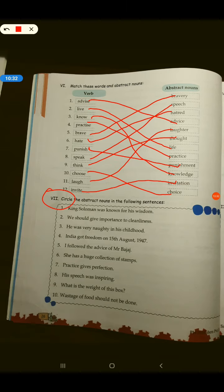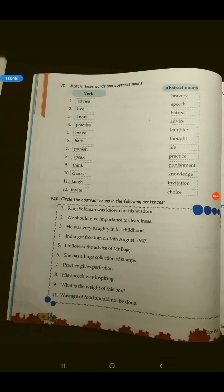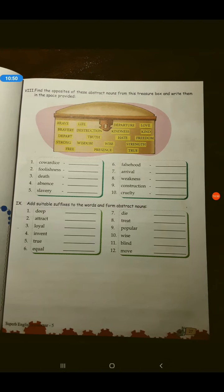Yeh wala aap khud kar hoge. Thik hai, I will give you one example. King Solomon was known for his wisdom. Wisdom is something which we can't touch or see, we can only feel. So wisdom is the abstract noun. Rest aap karoge bacha log apne homework ke liye. Let's see the next page.